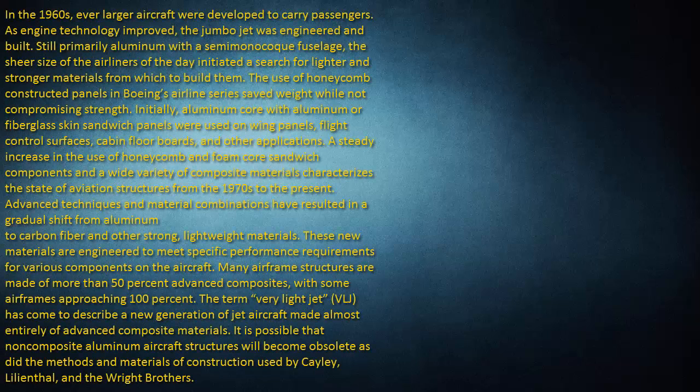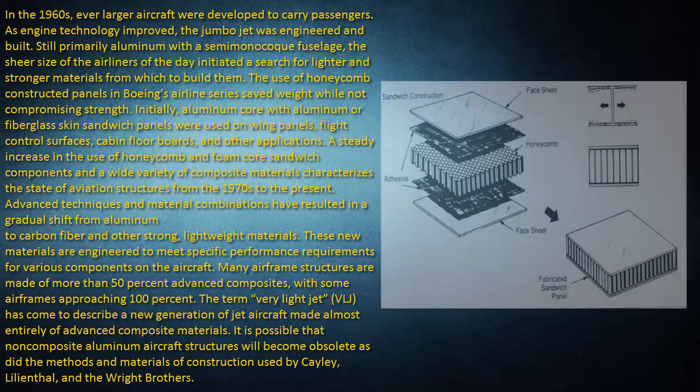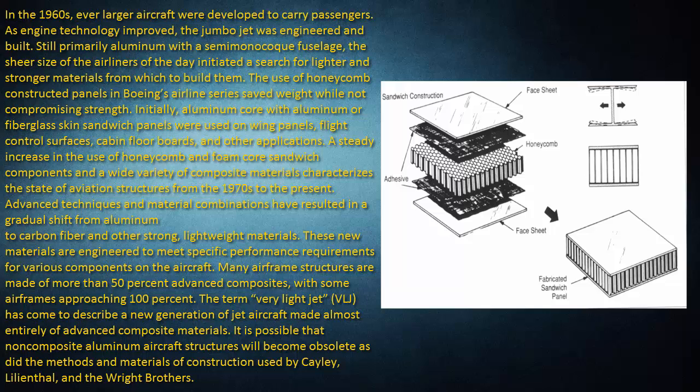In the 1960s, ever larger aircraft were developed to carry passengers. As engine technology improved, the jumbo jet was engineered and built. Still primarily aluminum with a semi-monocoque fuselage, the sheer size of the airliners of the day initiated a search for lighter and stronger materials. The use of honeycomb constructed panels in Boeing's airline series saved weight while not compromising strength. Initially, aluminum core with aluminum or fiberglass skin sandwich panels were used on wing panels, flight control surfaces, cabin floorboards, and other applications. A steady increase in the use of honeycomb and foam core sandwich components and a wide variety of composite materials characterizes the state of aviation structures from the 1970s to the present. Advanced techniques and material combinations have resulted in a gradual shift from aluminum to carbon fiber and other strong, lightweight materials, engineered to meet specific performance requirements for various components on the aircraft.